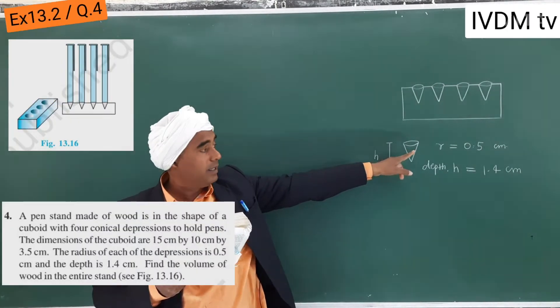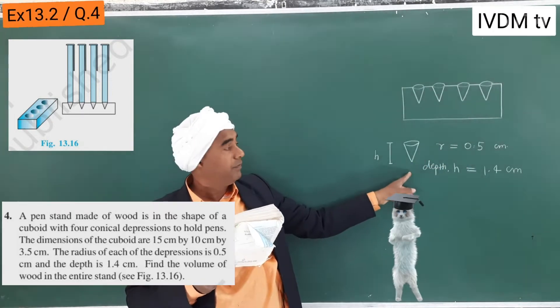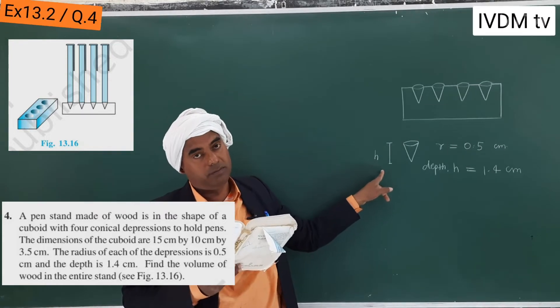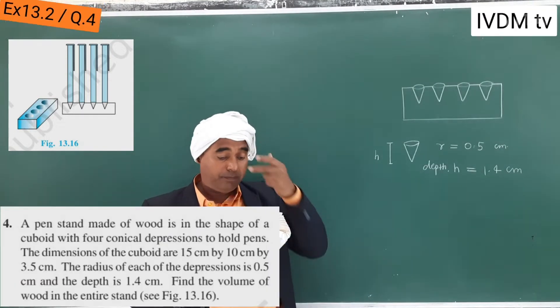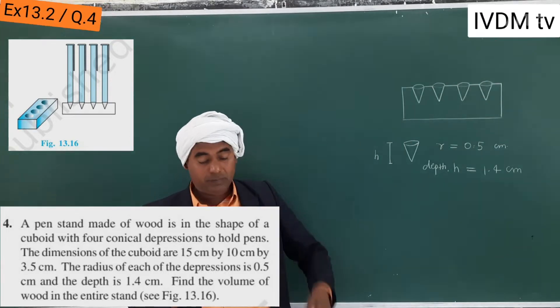And depth is - depth actually is here equal to the height of the cone. Because it is inside, so it is written depth. Height means outside, so depth is 1.4 centimeter.